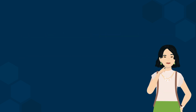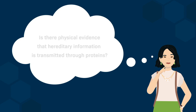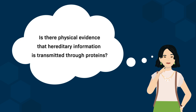So, now we need to ask another question. Is there physical evidence that hereditary information is transmitted through proteins? Proteins are essential for the functioning of cells, and each protein is characterized by three things.